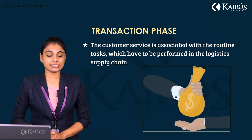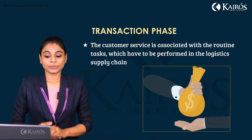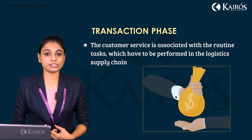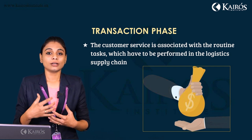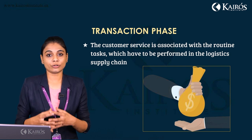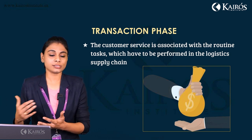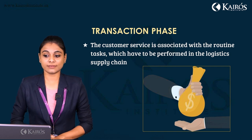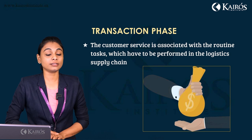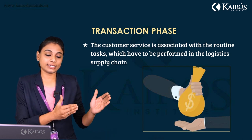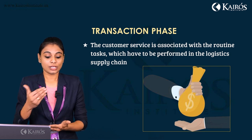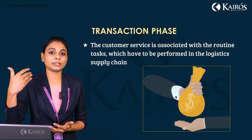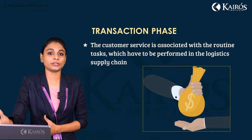The second phase is the transaction phase. Here, the actual transaction is happening — the product is being purchased by the customer, with an exchange of product for money. Customer service here is associated with routine tasks performed in the logistic supply chain. For example, when you order from Amazon or Flipkart, you receive periodic updates about your order, so the customer always knows where the product is at any given point.